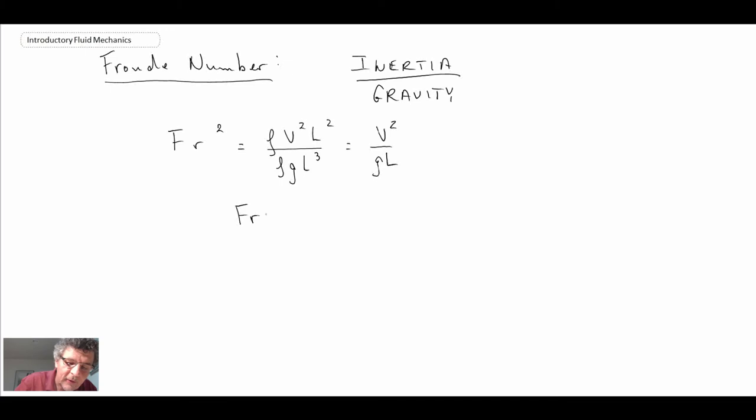If we don't write it as the square, we get velocity over square root of gL, where g is a gravitational constant and L is some length scale.